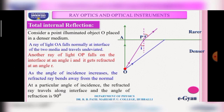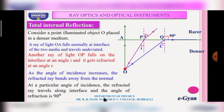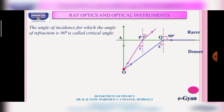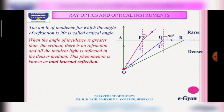At a particular angle of incidence, the refracted ray travels along the interface, making an angle of refraction of 90 degrees. The angle of incidence for which the angle of refraction is 90 degrees is called the critical angle. When the angle of incidence is greater than the critical angle, there is no refraction and all the incident light is reflected back into the denser medium.